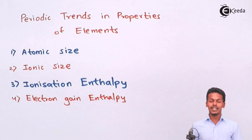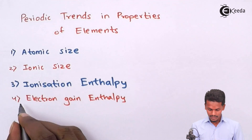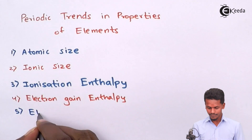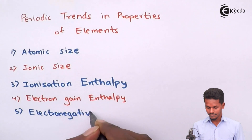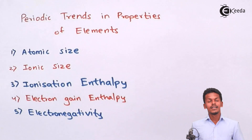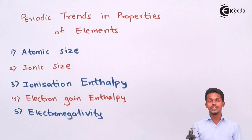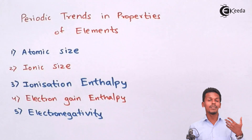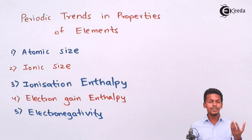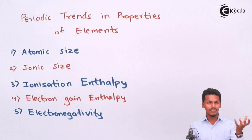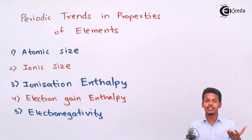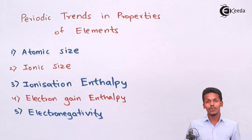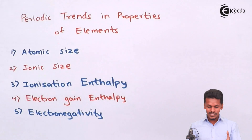The last property is electronegativity. Electronegativity is the tendency of an atom to acquire or accept an electron from another atom. Fluorine is the element with the highest electronegativity in the whole periodic table.